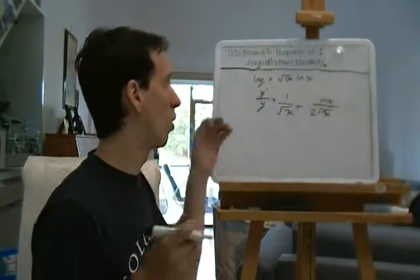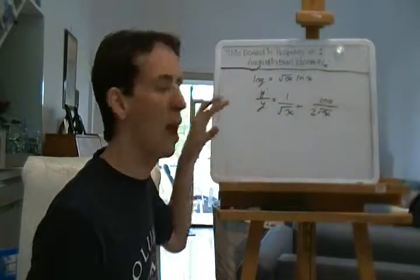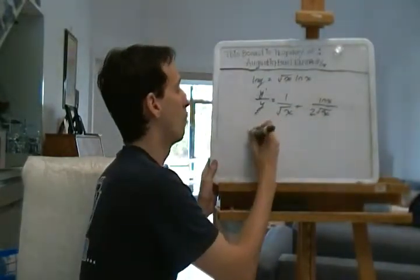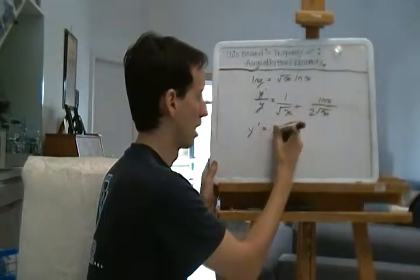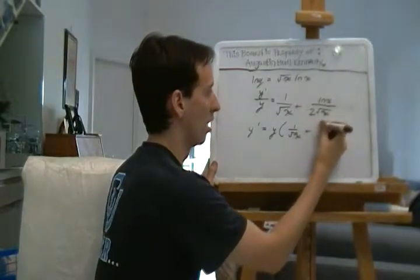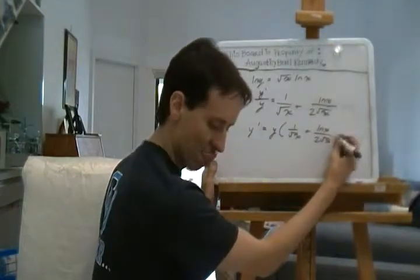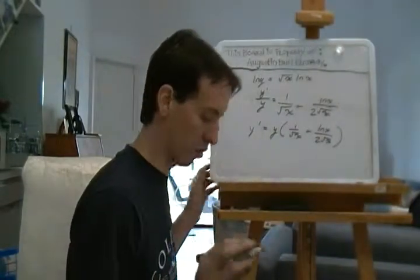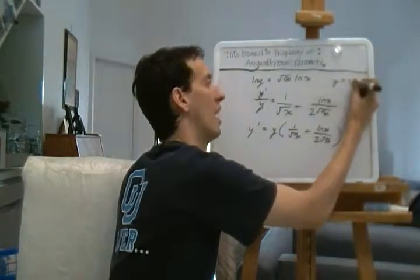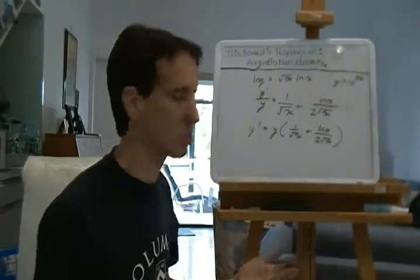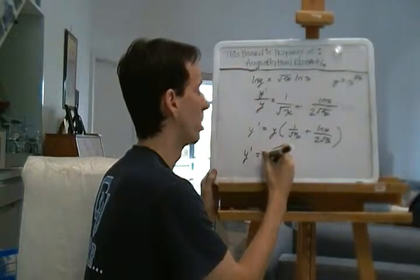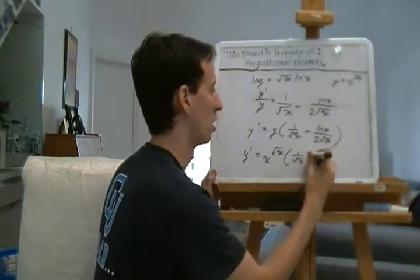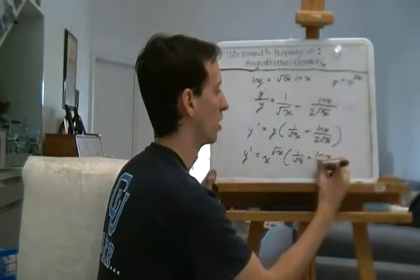We're going to multiply everything by y — we have y prime over y, and we want y prime by itself. So multiply both sides by y. We get y prime equals y times 1 over square root of x plus ln x over 2 square root of x. But remember what we started with: y equals x to the square root of x. So y prime equals x to the square root of x times 1 over square root of x plus ln x over 2 square root of x.